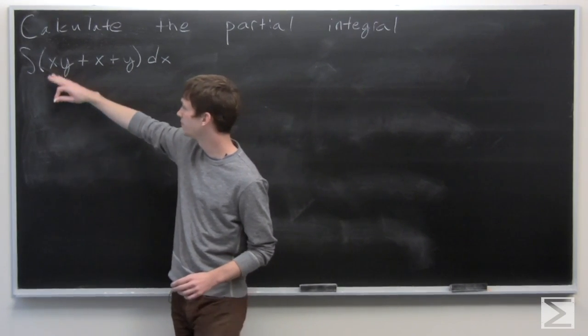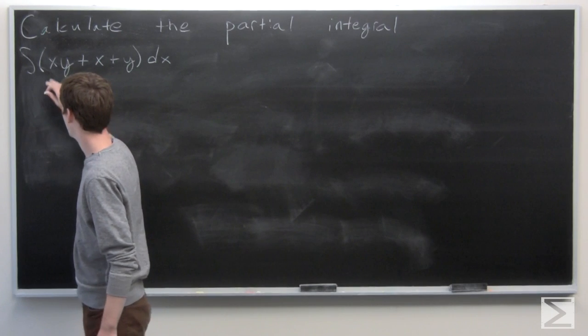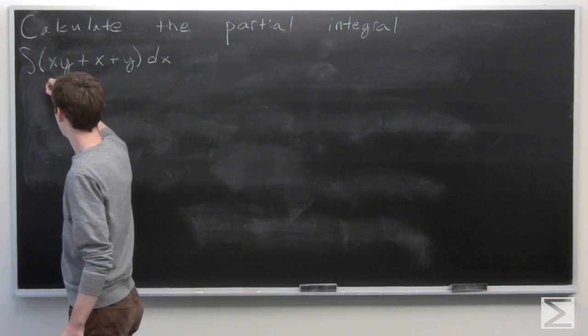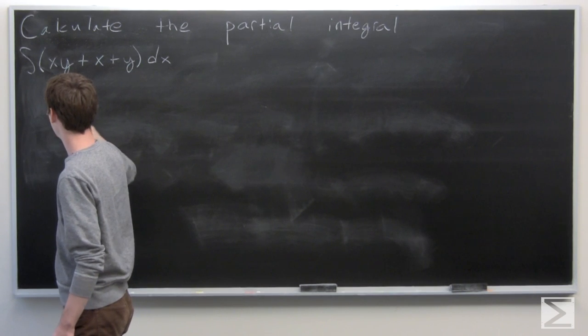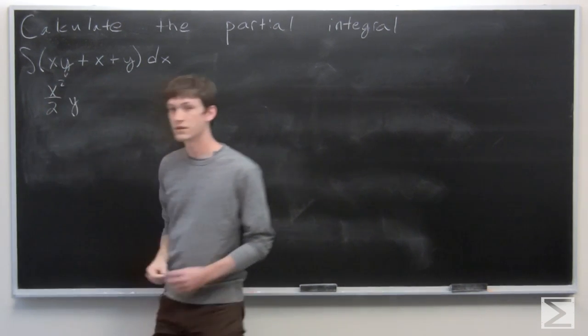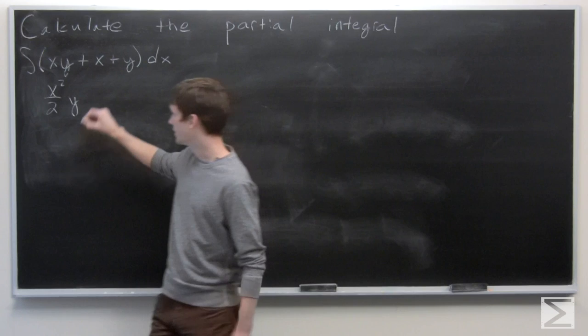So we have the integral of x is x squared over 2 times our constant y plus the integral of x.